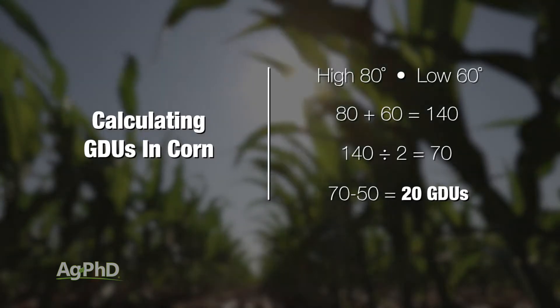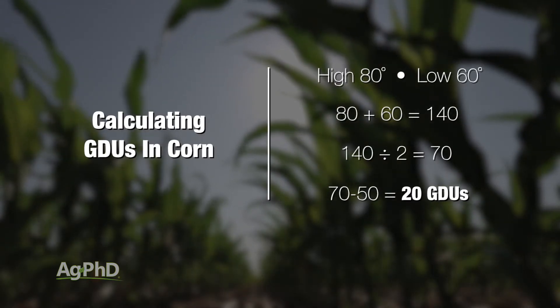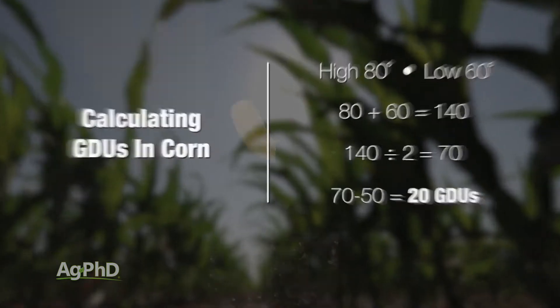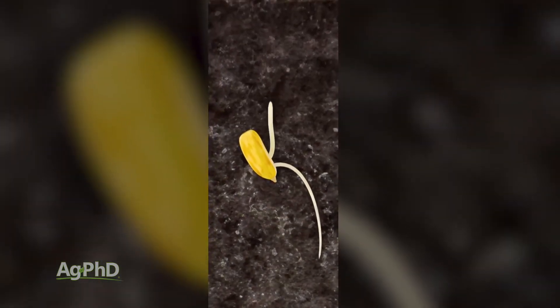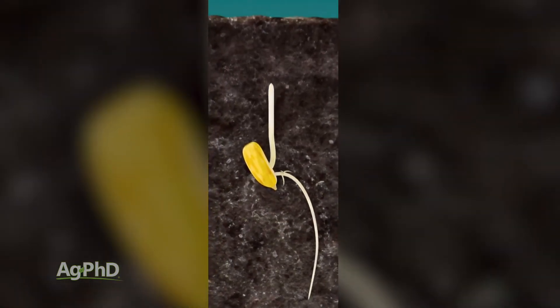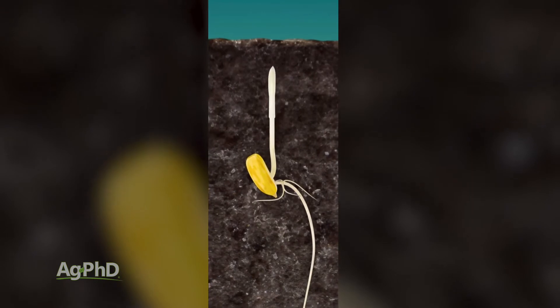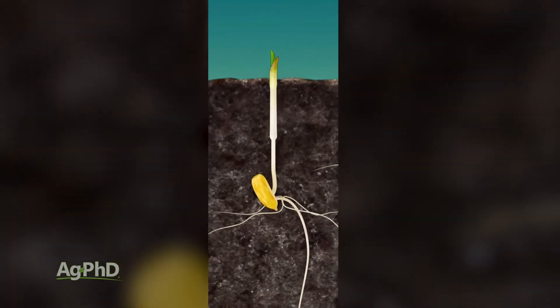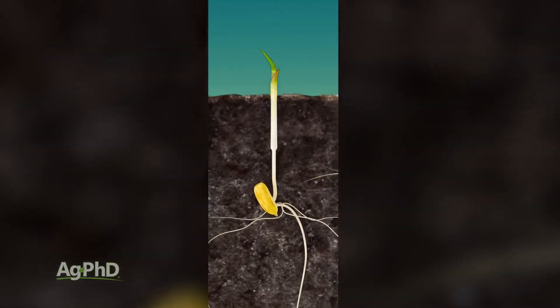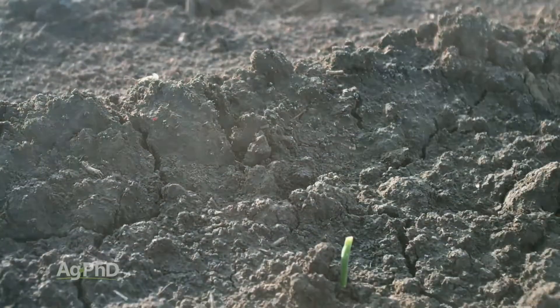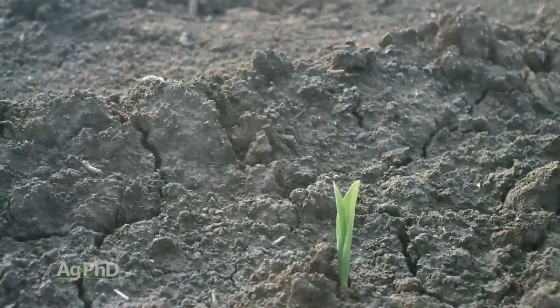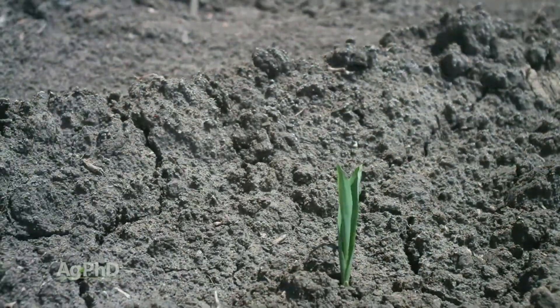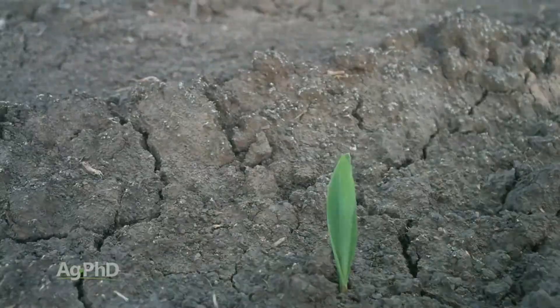How much is 20 GDUs? It's estimated it takes around 100 GDUs for corn to emerge from the ground. So you plant the corn, you get some moisture on it, it germinates, it's ready to go — and it takes about an accumulation of 5 of these days with an 80-degree high and 60-degree low for that corn to emerge from the ground.